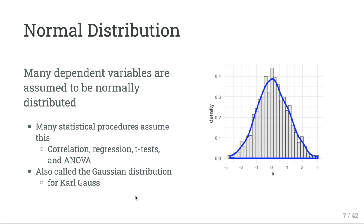This curve is also called the Gaussian distribution, named after Carl Gauss, who did a lot of work behind it and found the equation that described it. We're not going to go into all that detail right now, but know that Gaussian and normal distribution are synonyms.